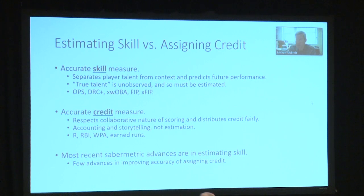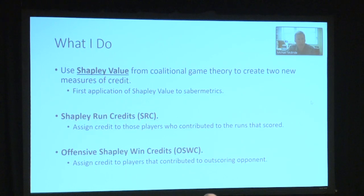Most of the recent advances in SABR metrics have been in estimating skill ever more precisely. But there have been fewer advances in improving the accuracy of assigning credit. In my project, I take a concept from coalitional game theory called the Shapley value to create two new measures of credit. To my knowledge, it's the first application of the Shapley value in SABR metrics.